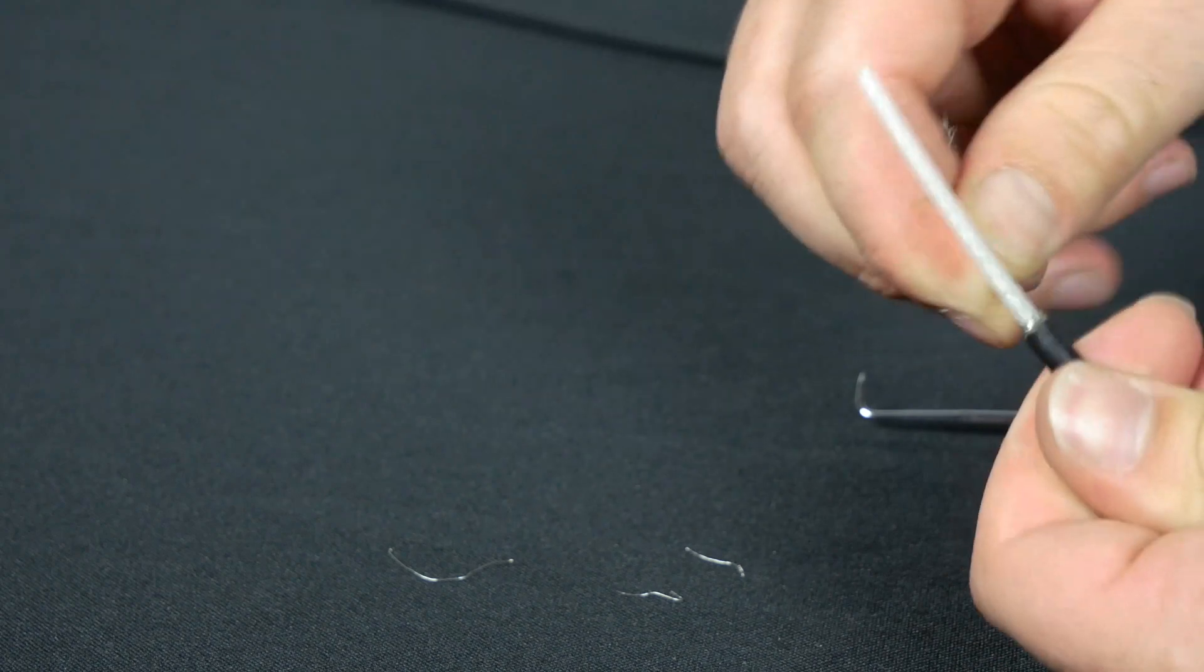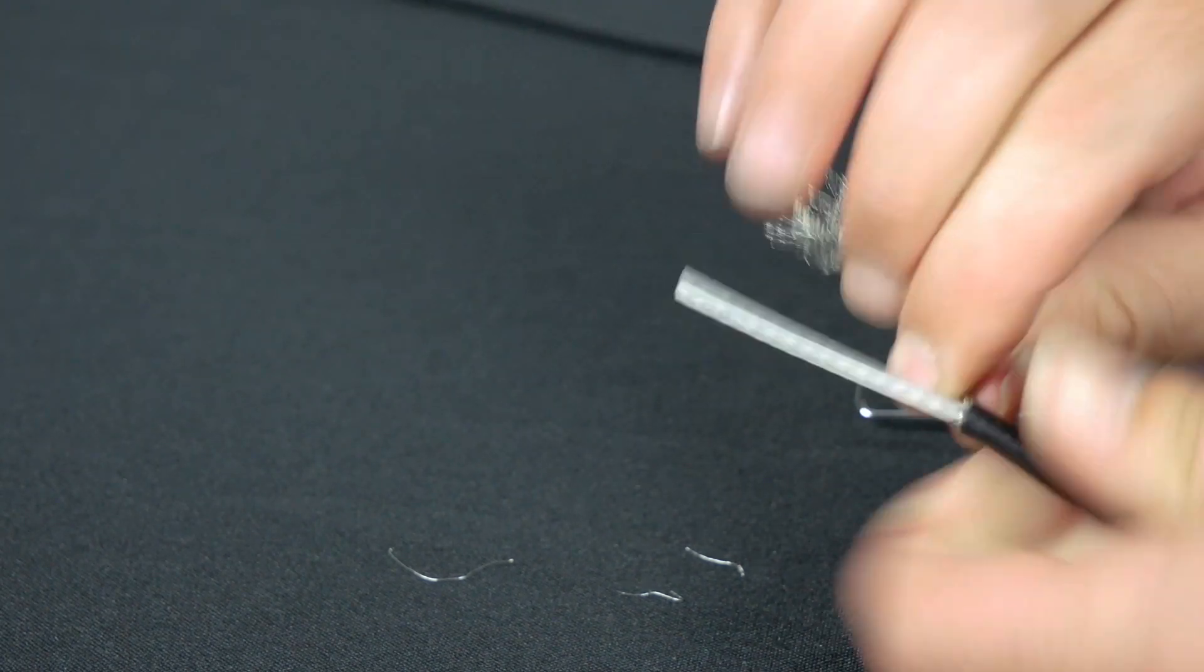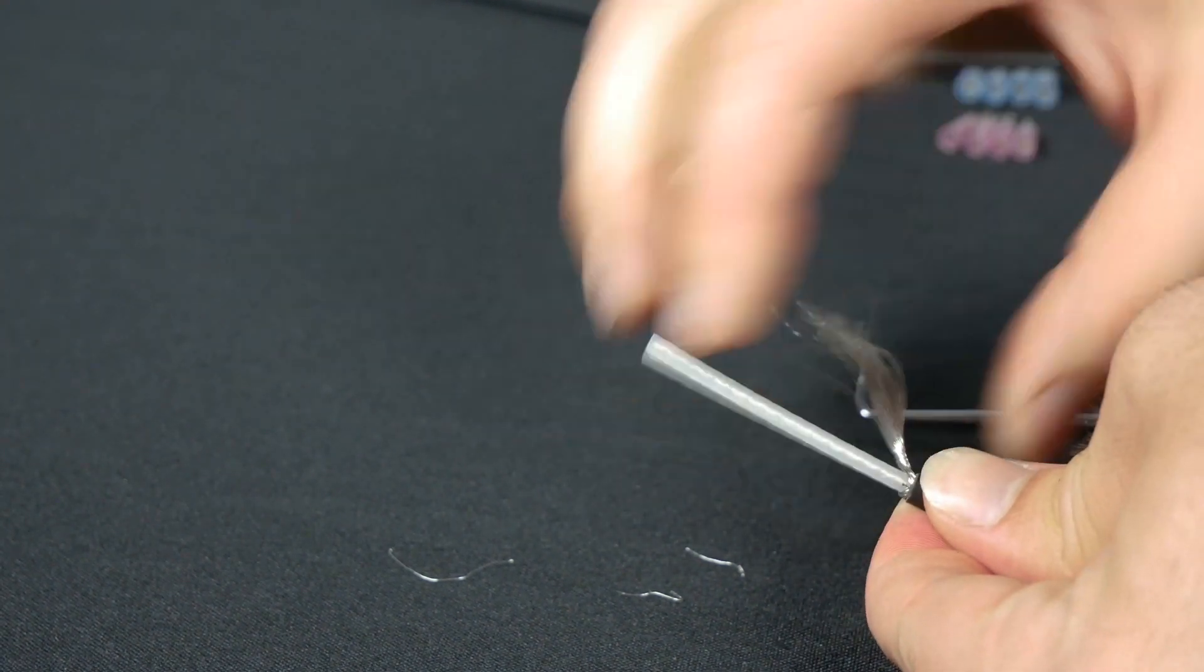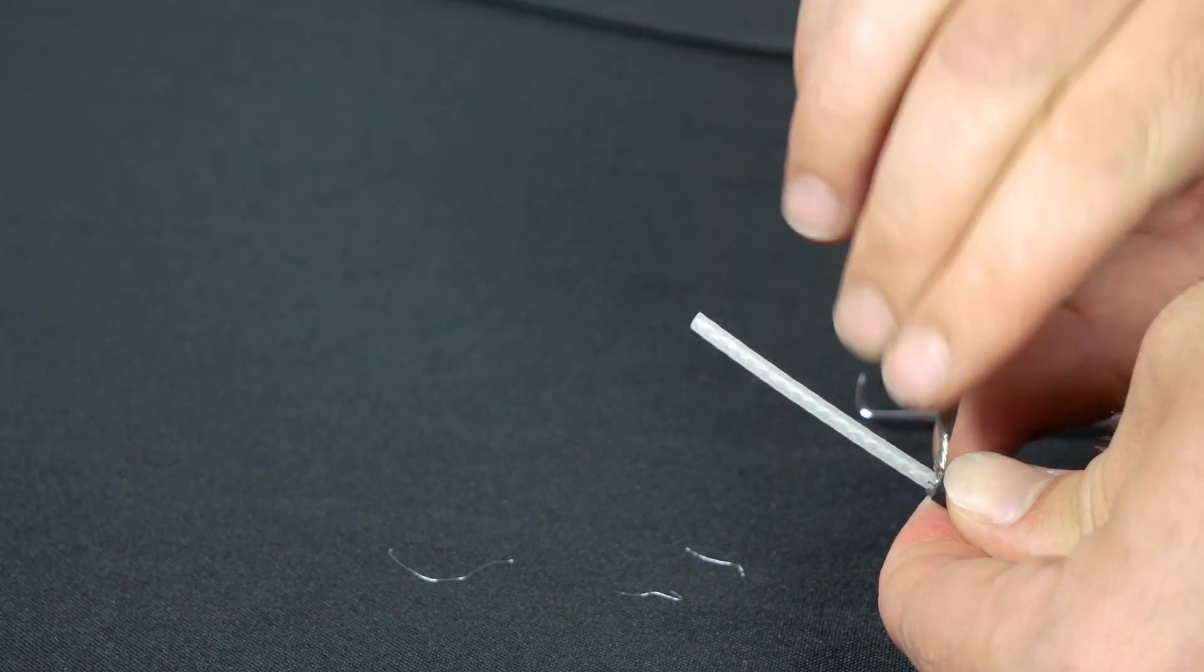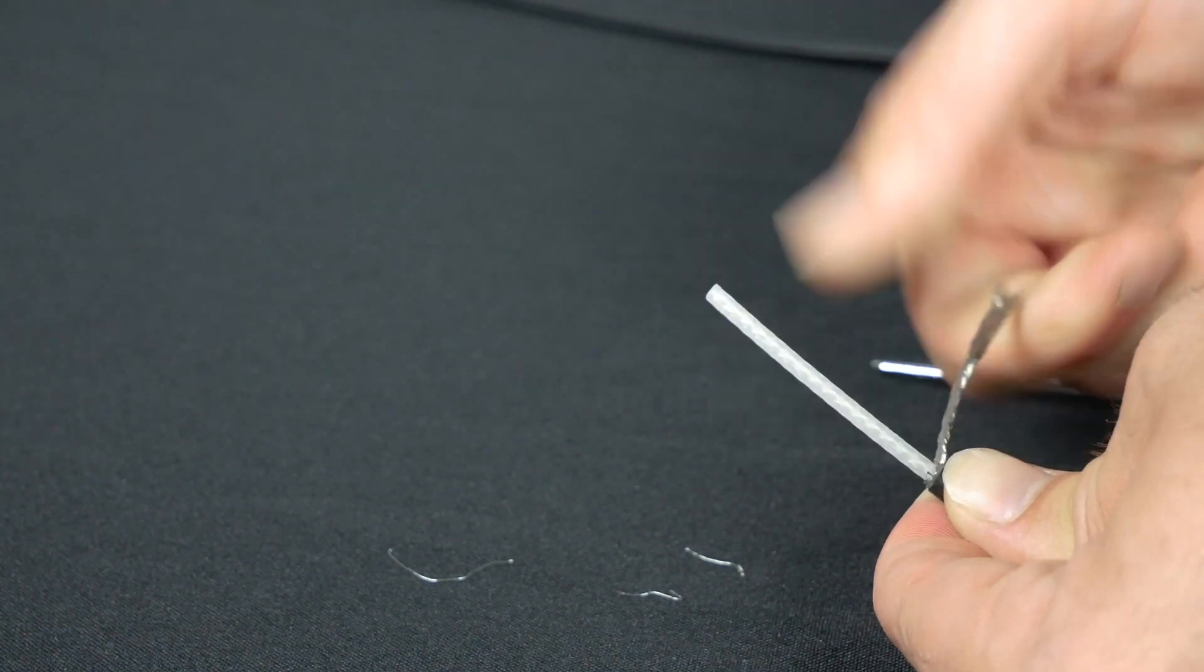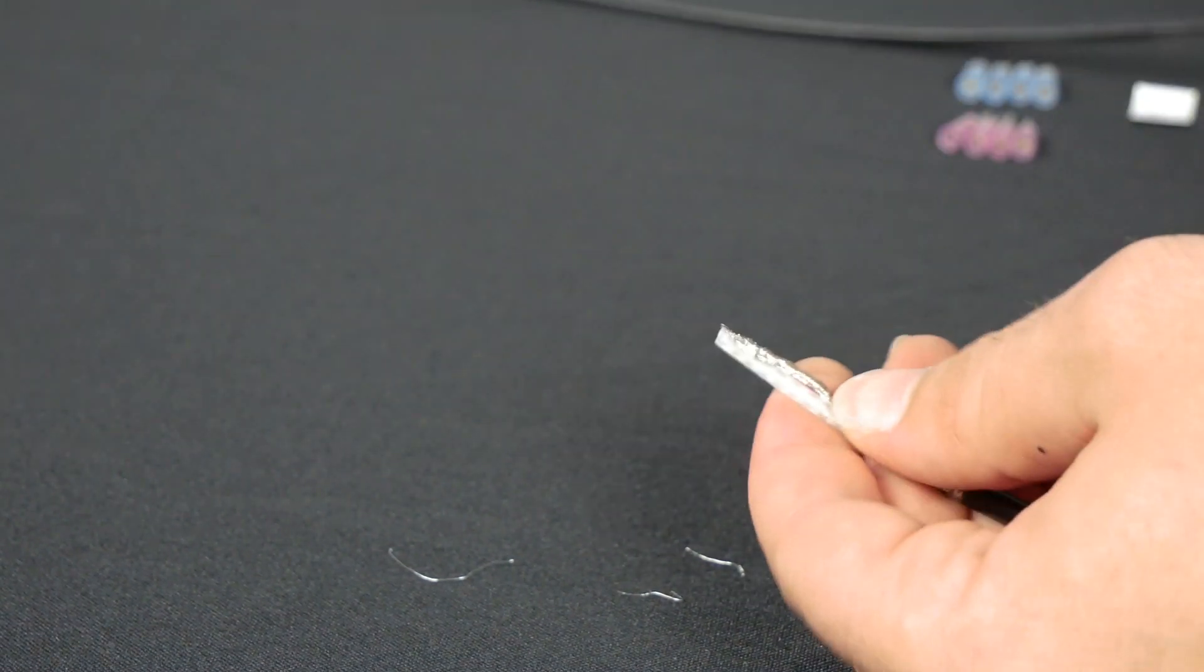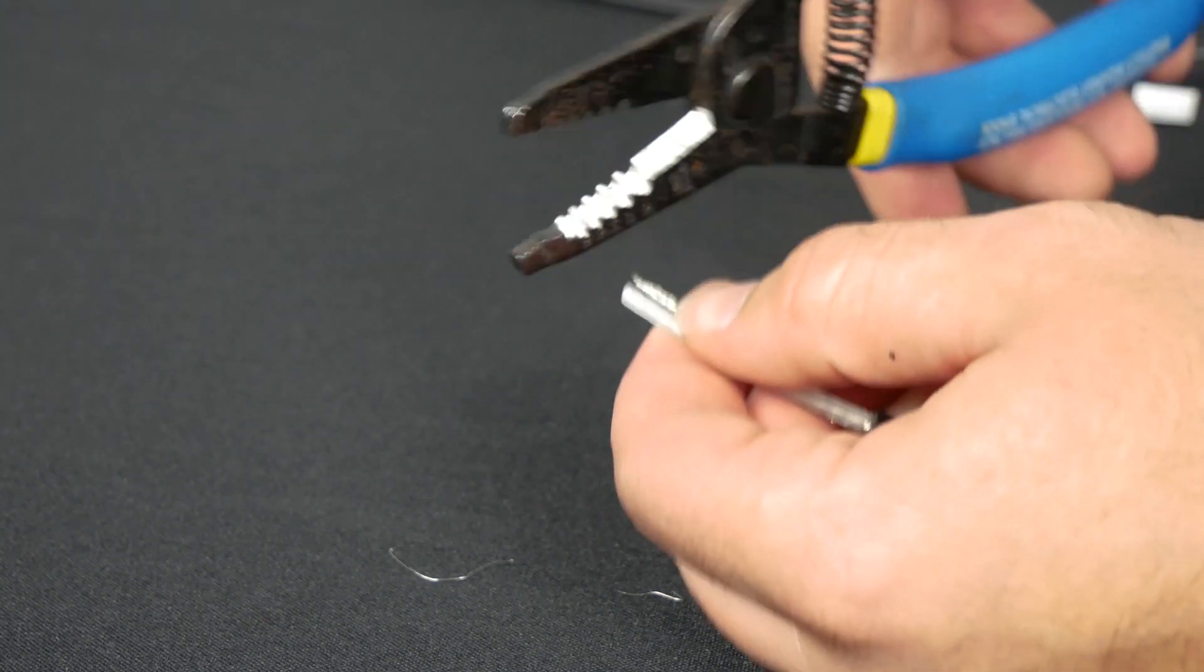After you get your wires separated and straightened, twist them together to prepare them to crimp the terminal onto. Then trim the ends of your wires so they are equal length.